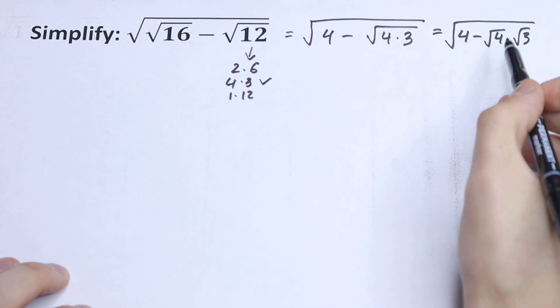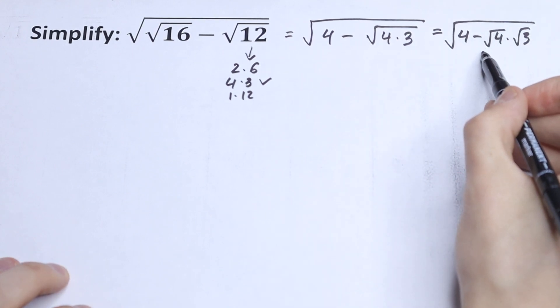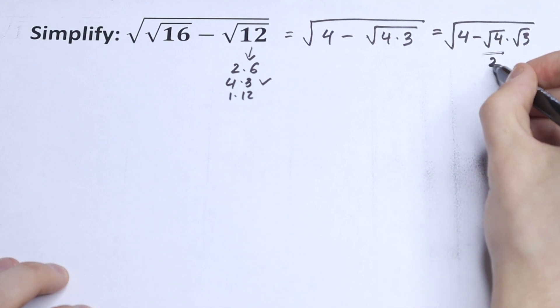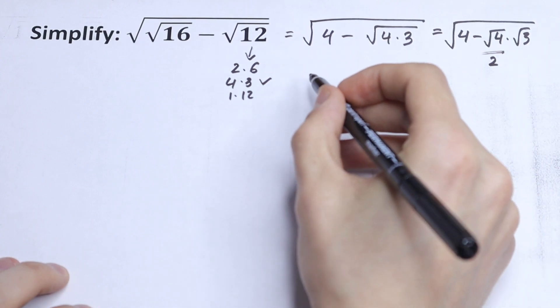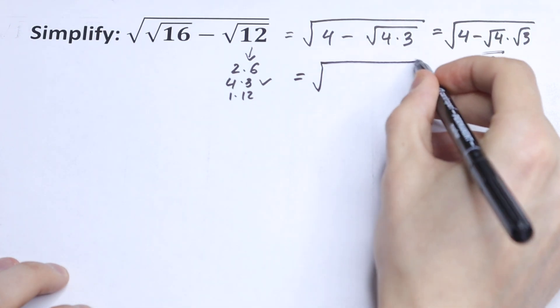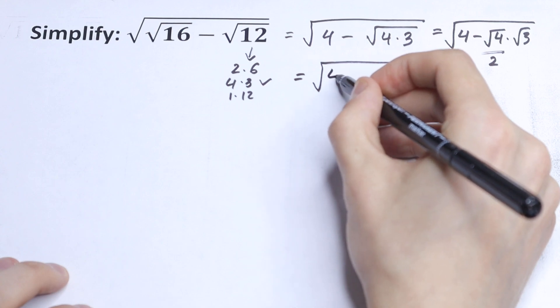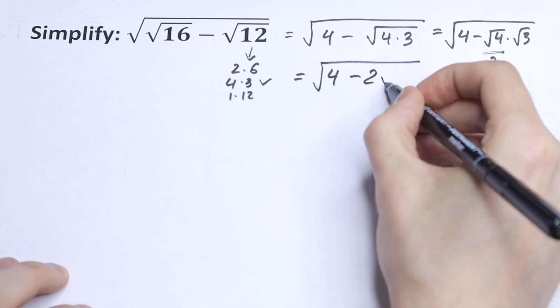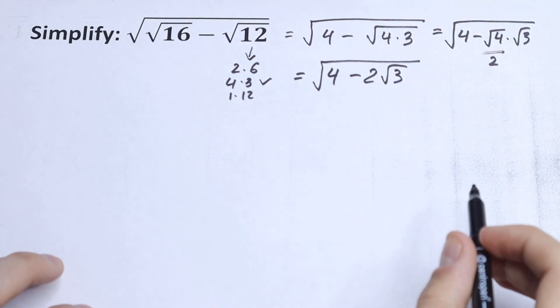We know that the square root of 4 is equal to 2. So as a result, we will have the interesting expression: 4 minus 2 times the square root of 3.